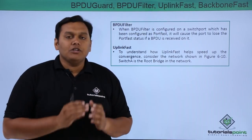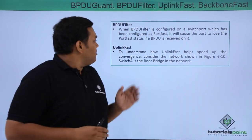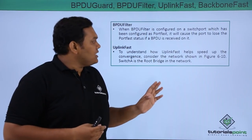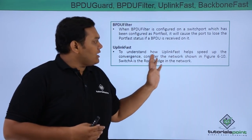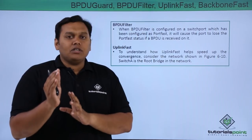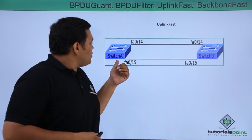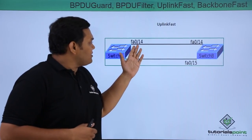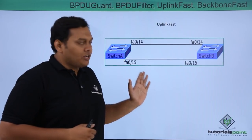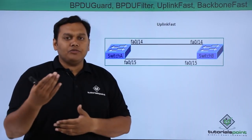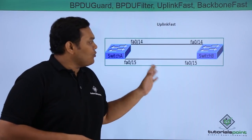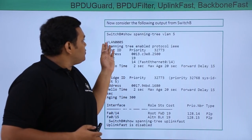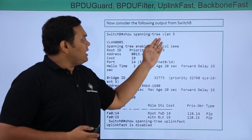This is how the BPDU filter function works. Coming to uplink fast, to understand how it helps, we consider a network with switch A, switch B, and a root bridge, with FA0/14 and FA0/15 interfaces. When you want to configure, you use a simple syntax — switch B shows spanning tree VLAN 5, which displays the spanning tree available on the VLAN 5 network.